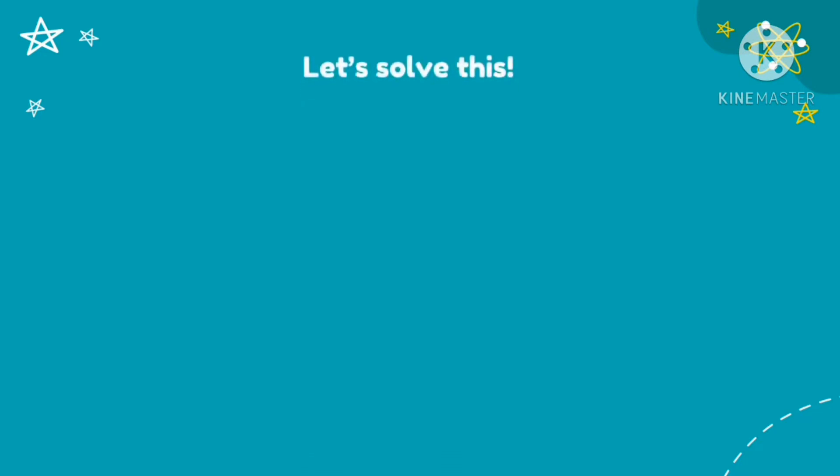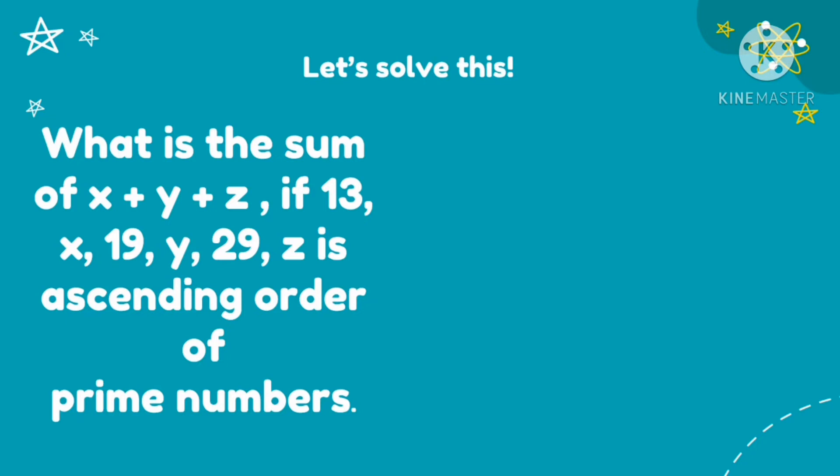Let's try to solve this problem. What is the sum of x plus y plus z if 13, x, 19, y, 29, z is ascending order of prime numbers? So how are we going to solve this? We're going to find the value of x, y, and z. It gives us a condition that says 13, x, 19, y, 29, z are arranged in ascending order. So prime numbers in ascending order. So if this is 13, what is the next prime number after 13? So we're going to find the value of x, then the value of y, and the value of z.